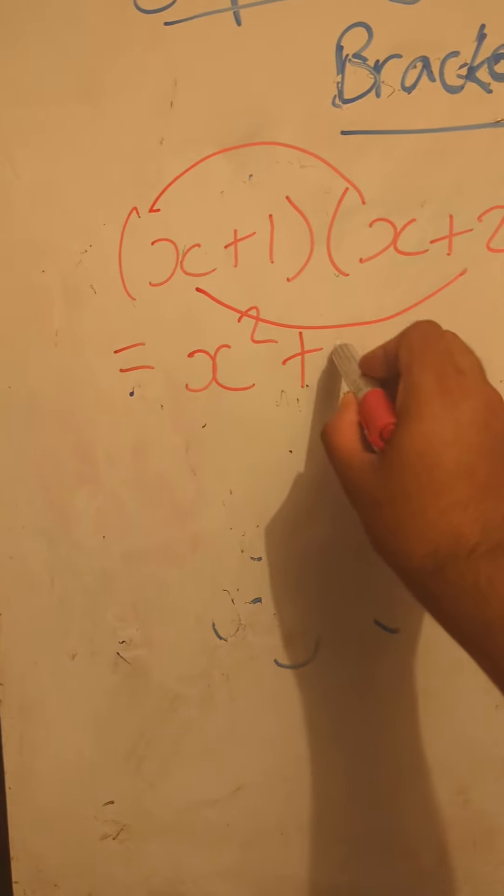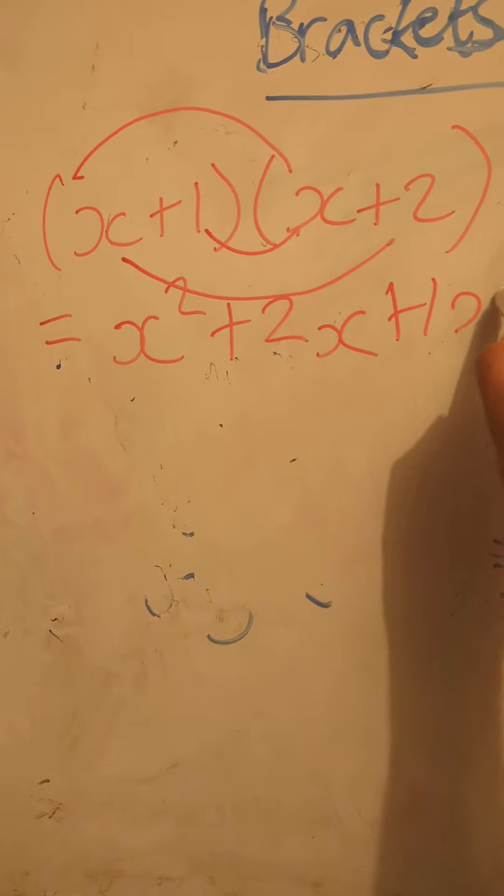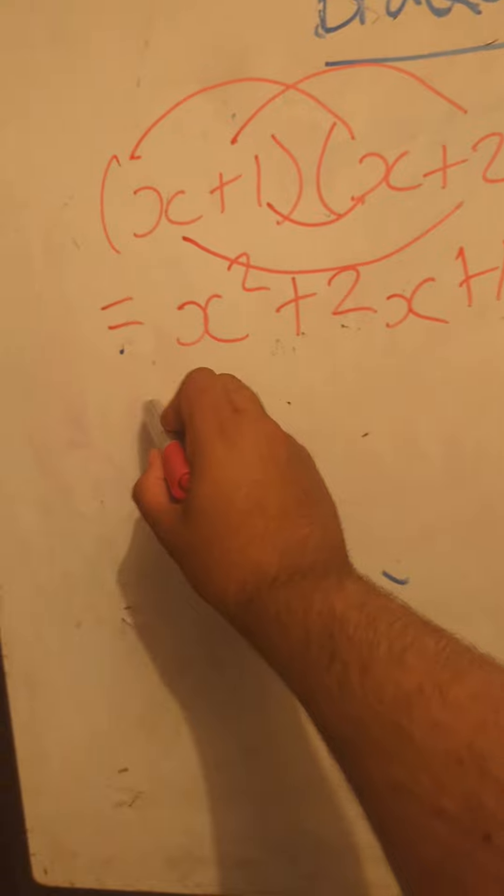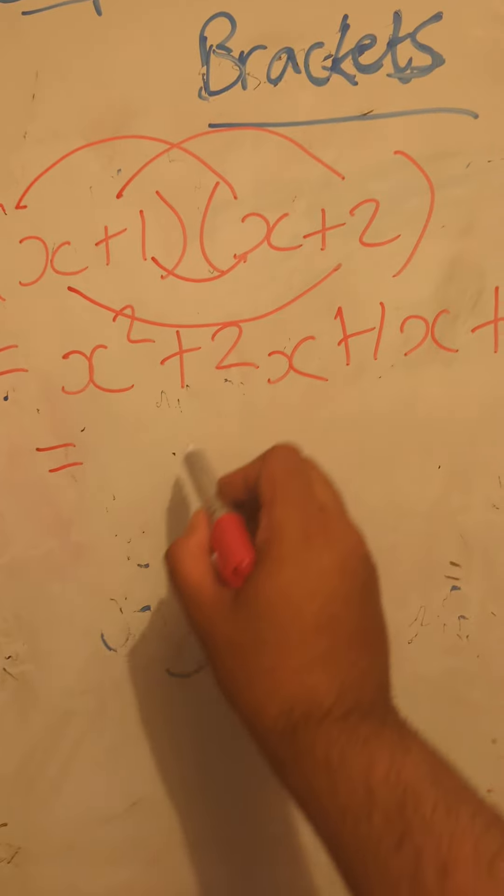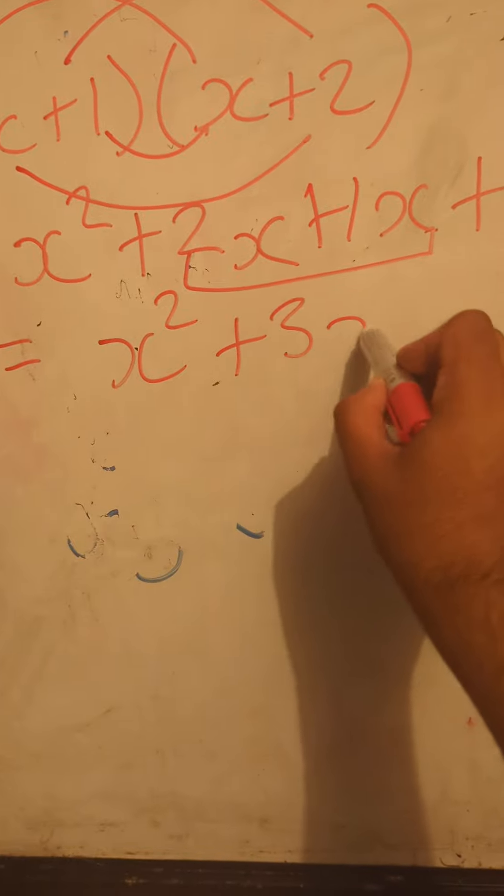Outer: x times 2 is plus 2x. Inner: 1 times x is plus 1x. Last: 1 times 2 is positive 2. Now simplifying by collecting like terms: x squared, this simplifies to just 3x, so plus 3x plus 2.